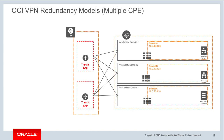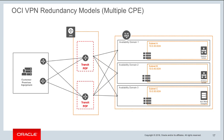For high availability, it is recommended to have multiple CPE devices on your on-premises side and create multiple IPSec tunnels with OCI. In this way, you eliminate the single point of failure on your end, and on the OCI headend side you have four IPSec tunnels connecting to two different physical routers in two different transit POP locations.